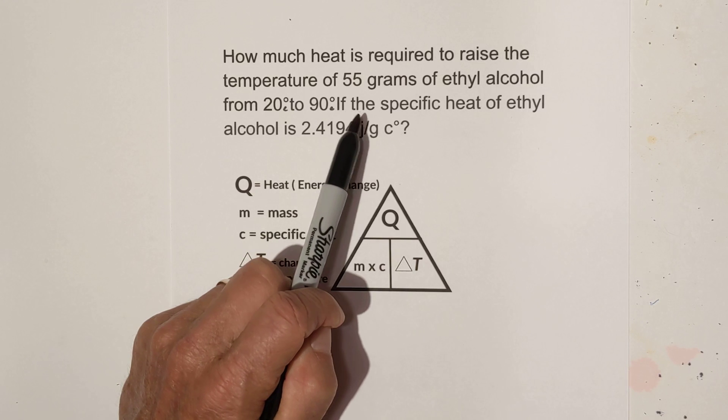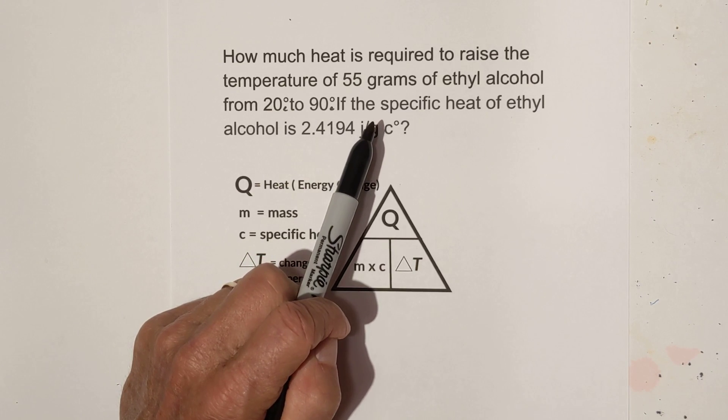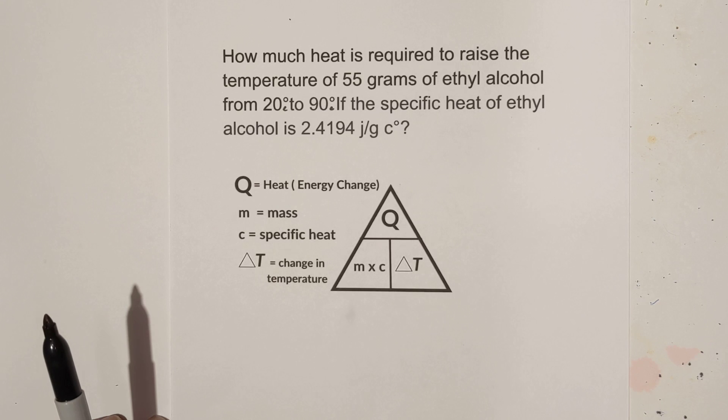If the specific heat of ethyl alcohol is 2.4194 joules per gram per Celsius. So let's see what we got.